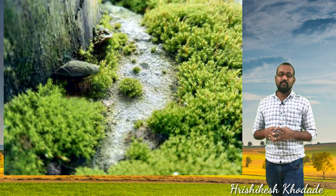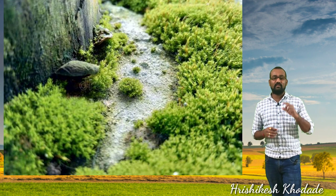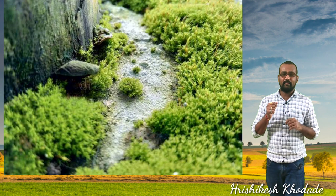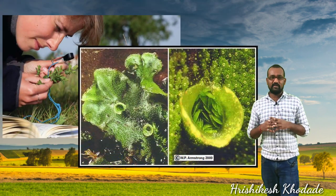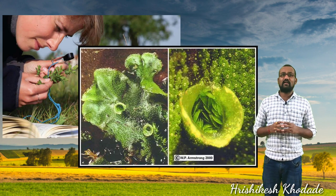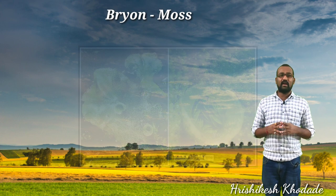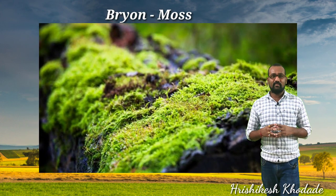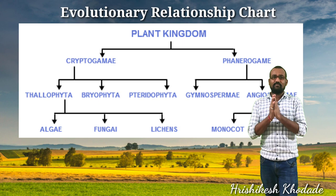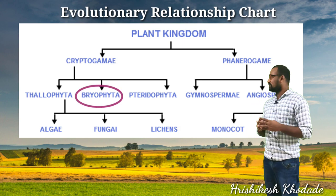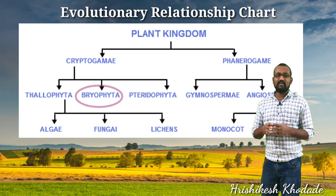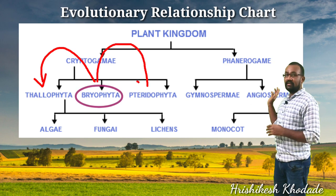Bryophytic plants are very small in size — they are considered microscopic and we require a magnifying lens or macro type camera lens to observe them. These bryophytes are named on the basis of the Latin name 'bryon,' which refers to a moss type of plant. On the evolutionary chart of the plant kingdom shown on screen, bryophytes are positioned between thallophytes and pteridophytes.